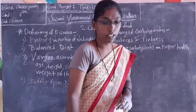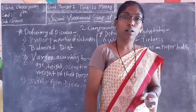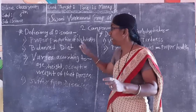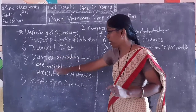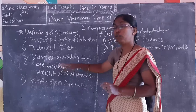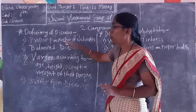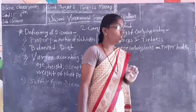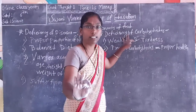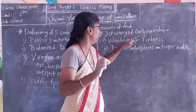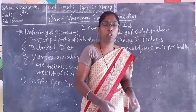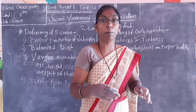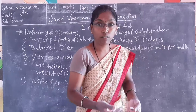Overeating is also a concern — proper proportion of nutrients is important. We get that from a balanced diet according to age, height, occupation, and weight. Proper proportion of carbohydrates gives proper health. If we do not get carbohydrates, we get weakness and tiredness. But if we get too many carbohydrates, we get excess heat in the body.